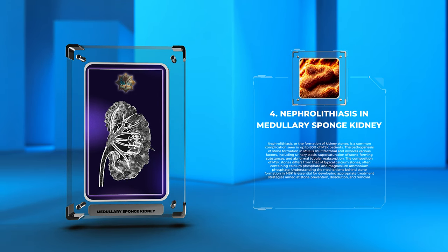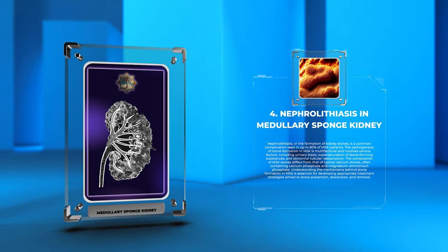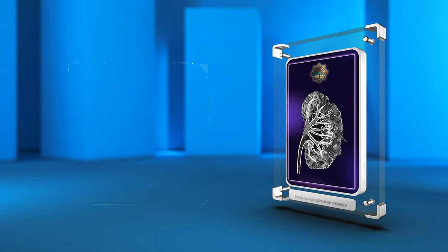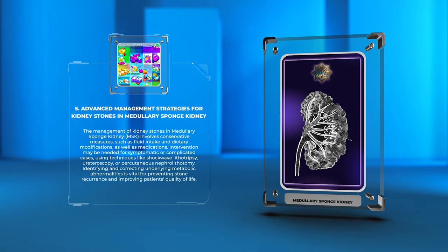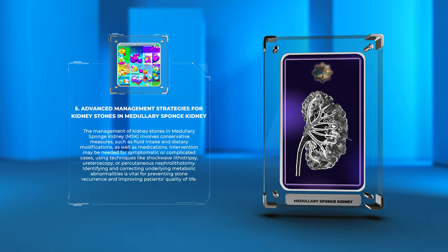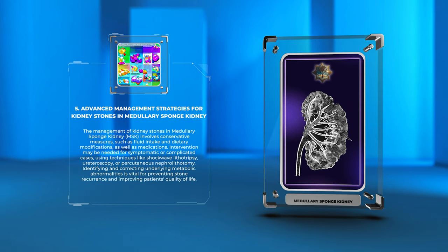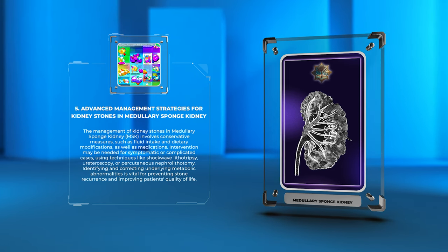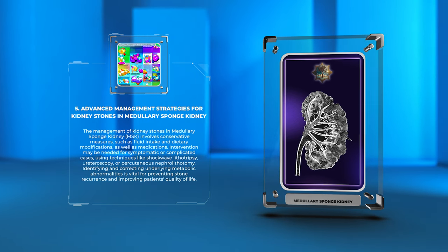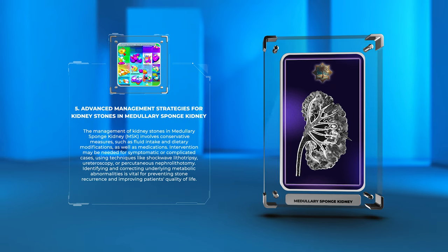Understanding the mechanisms behind stone formation in MSK is essential for developing appropriate treatment strategies aimed at stone prevention, dissolution, and removal. The management of kidney stones in medullary sponge kidney involves conservative measures, such as fluid intake and dietary modifications, as well as medications. Intervention may be needed for symptomatic or complicated cases, using techniques like shockwave lithotripsy, ureteroscopy, or percutaneous nephrolithotomy. Identifying and correcting underlying metabolic abnormalities is vital for preventing stone recurrence and improving patients' quality of life.